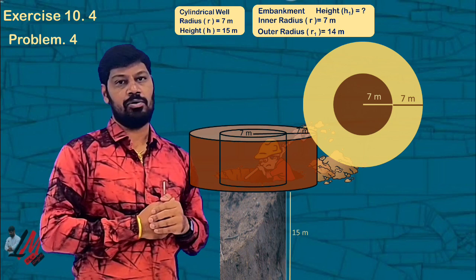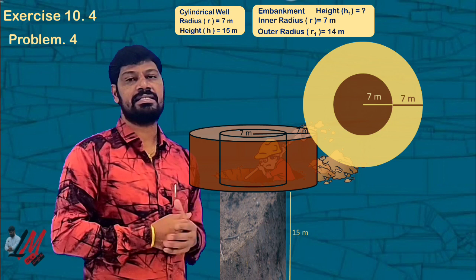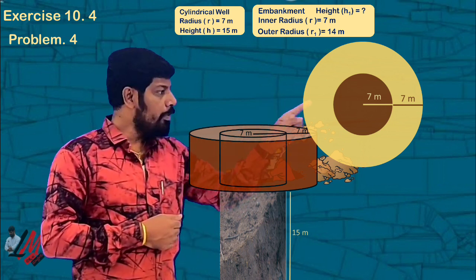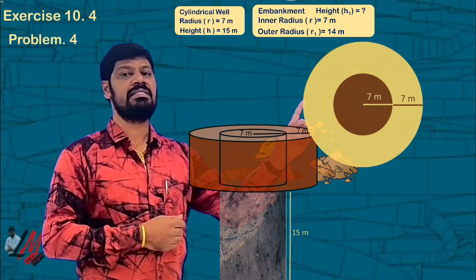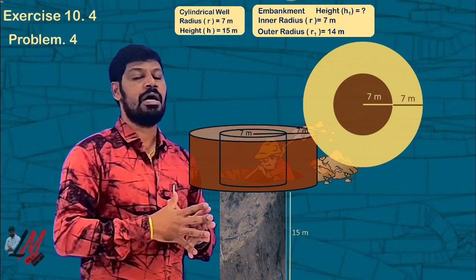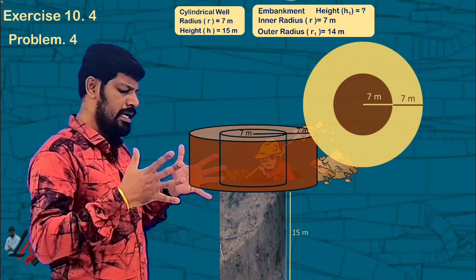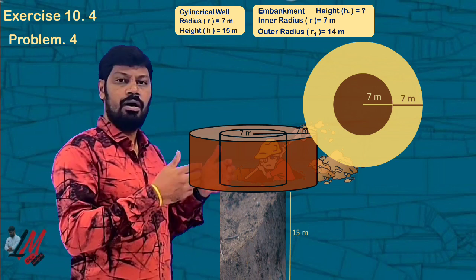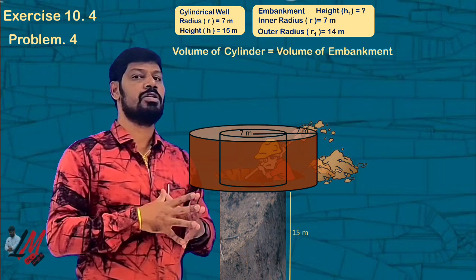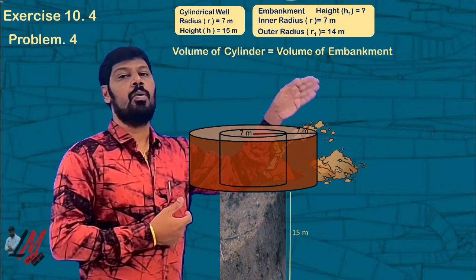The inner radius is here. The inner radius is 7 meters and the outer radius is R1. The inner radius is 7 meters, and R1 is equal to 14 meters. So I can confirm the outer radius R1 is equal to 14 meters. The volume of the well is equal to the volume of the embankment.